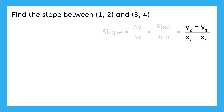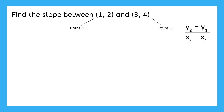I know that looks kind of confusing, but let me show you how simple it actually is. The ones and twos just tell us which point to use — the first or the second. So one means the first point, and two means the second point. The x or y just means which coordinate to use. So the x of the first point is x1, and the y from that point is y1. And same for the second point: x2 and y2.